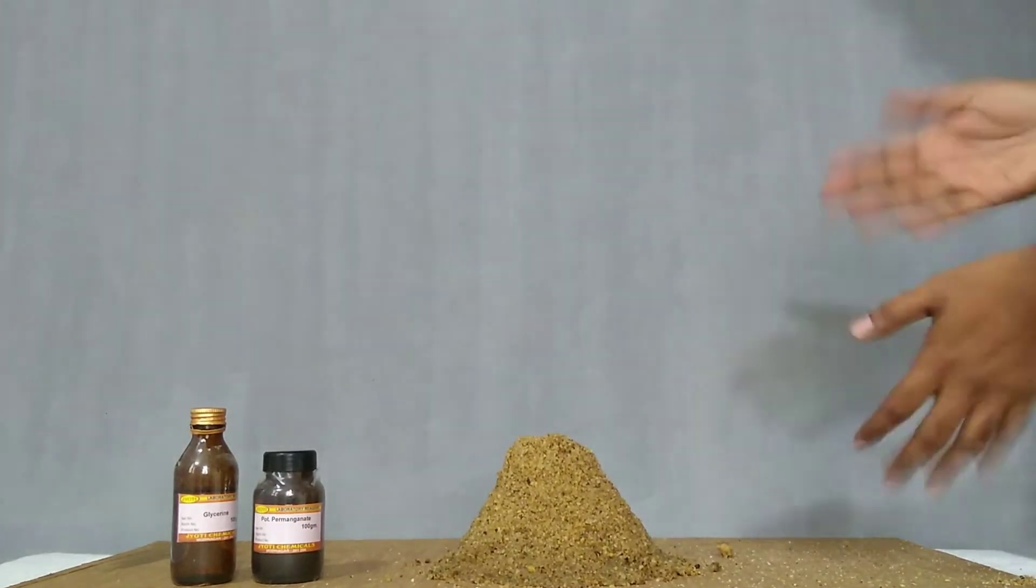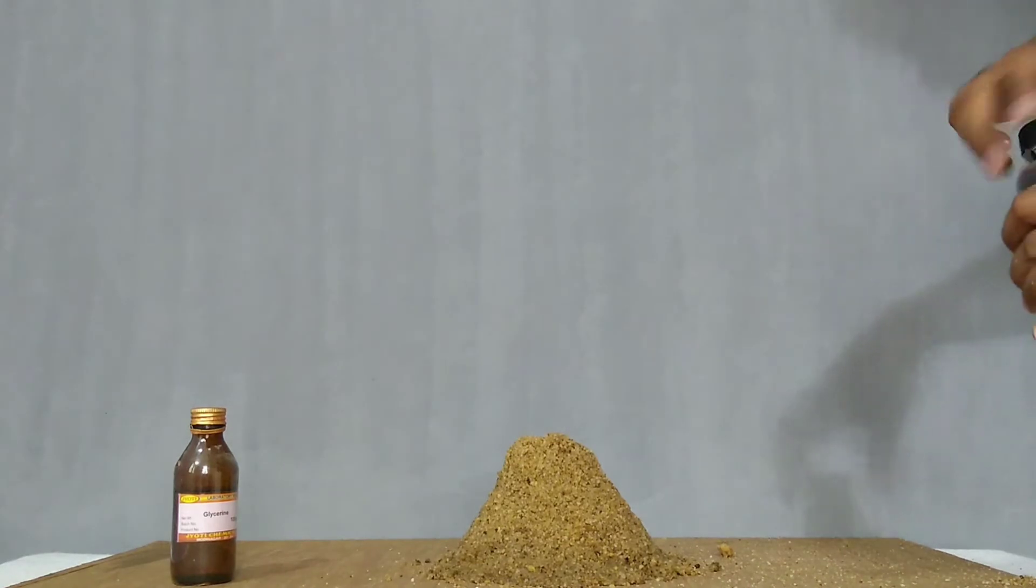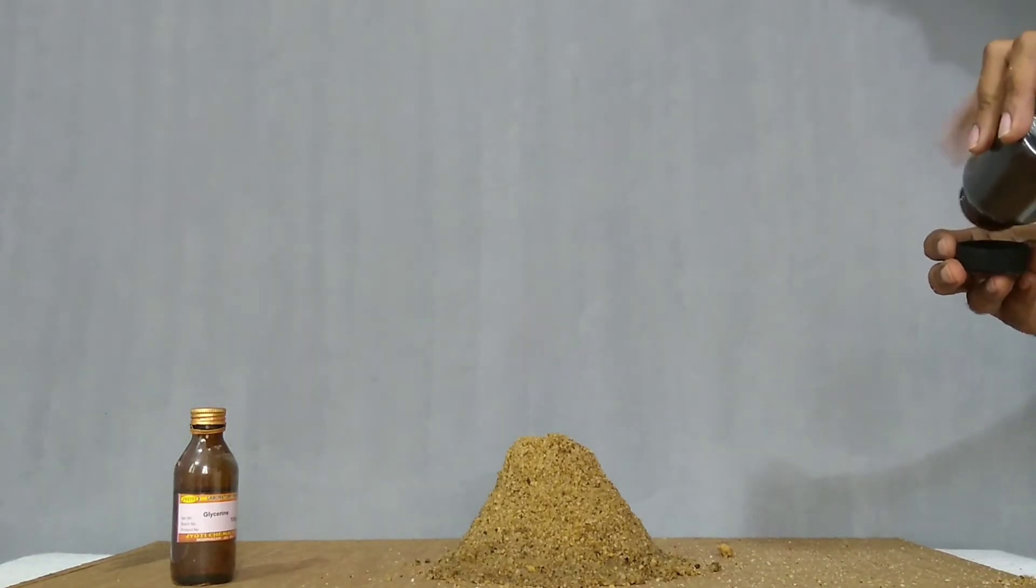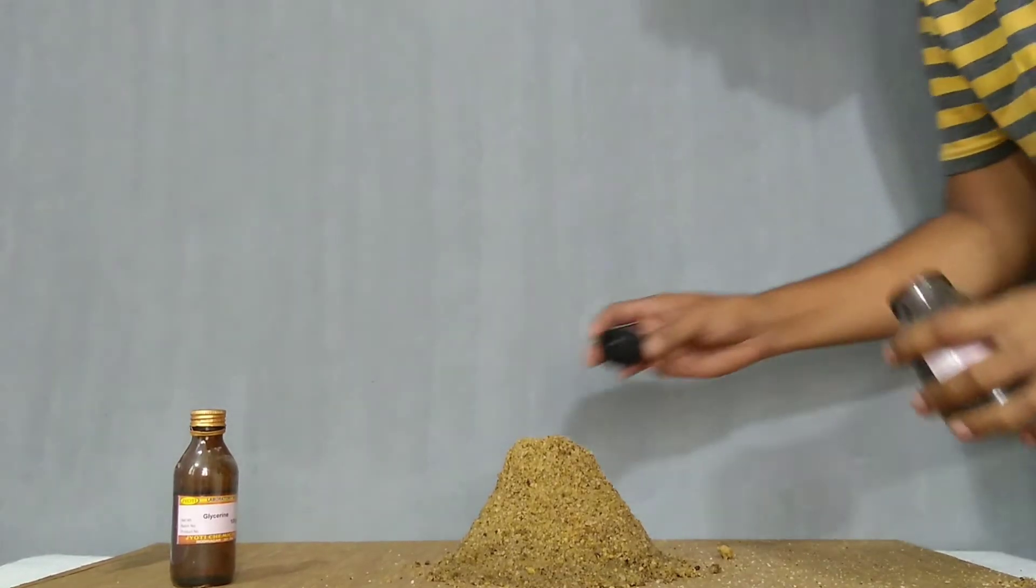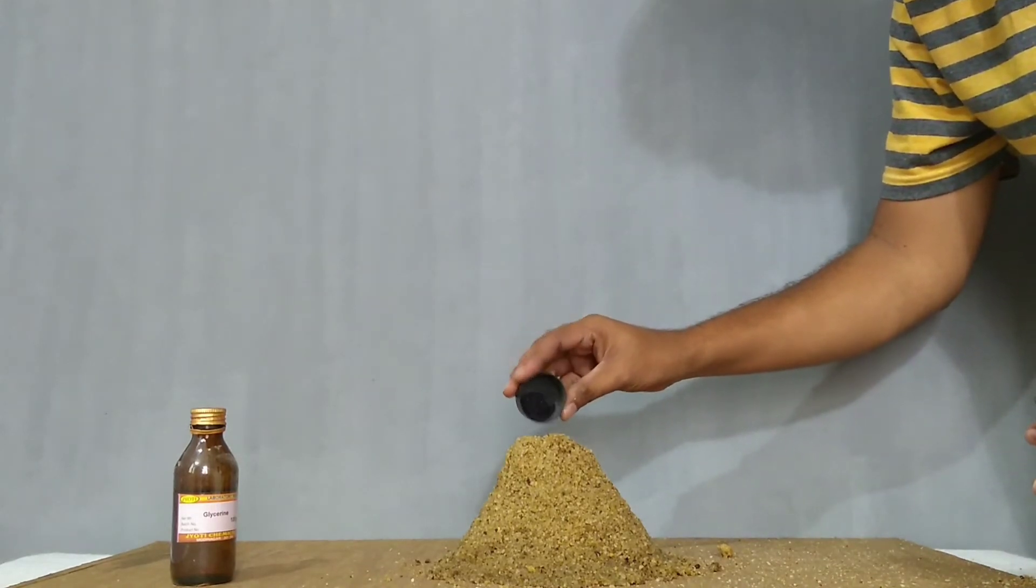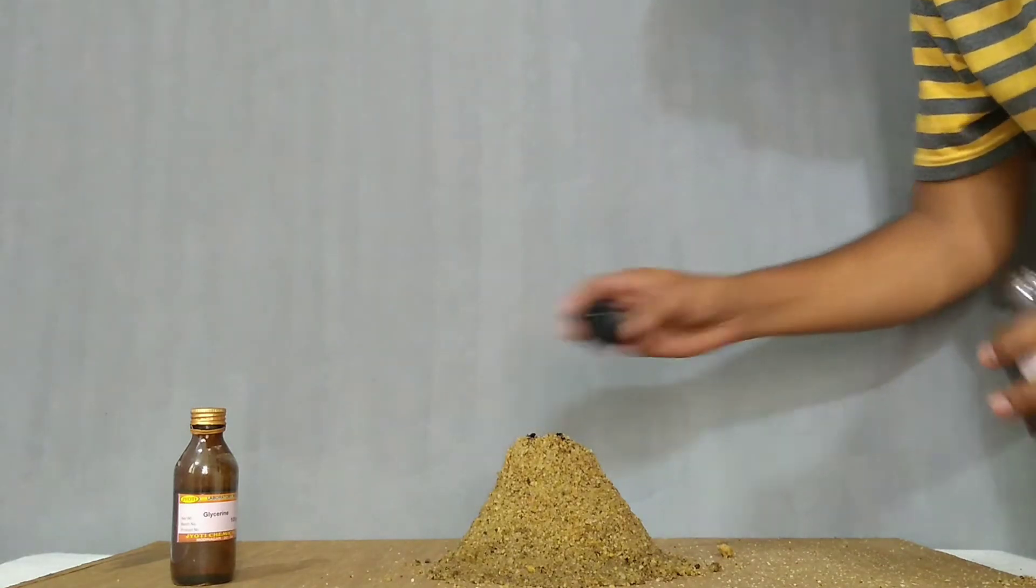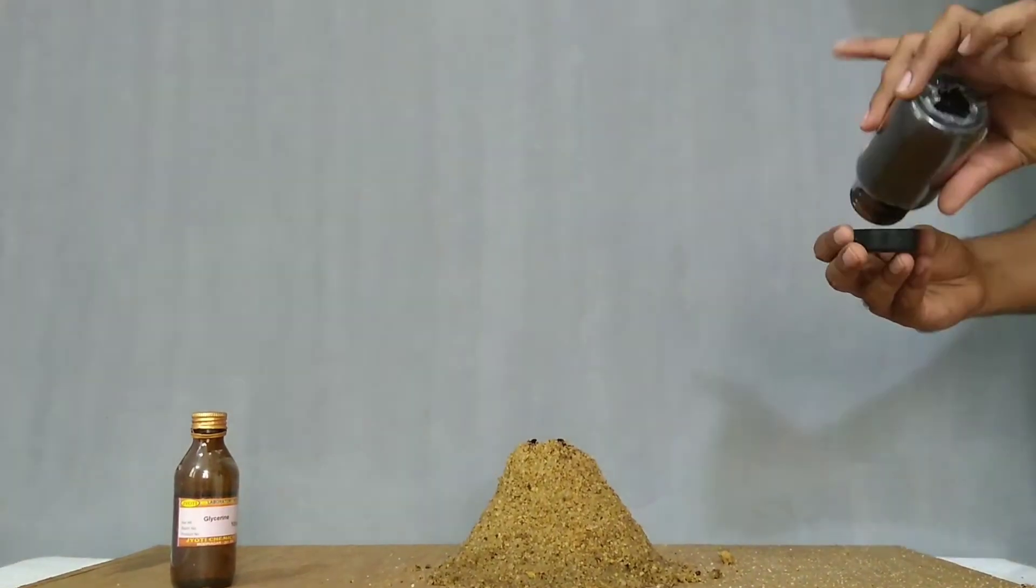Now take potassium permanganate. Pour the potassium permanganate in the hole. Add very little of potassium permanganate.